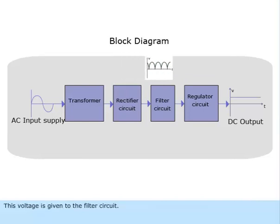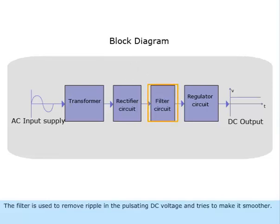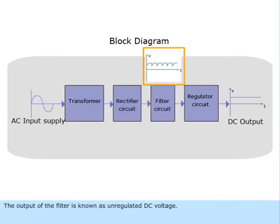This voltage is given to the filter circuit. The filter is used to remove ripple in the pulsating DC voltage and tries to make it smoother. The output of the filter is known as unregulated DC voltage.